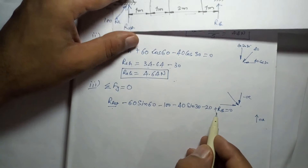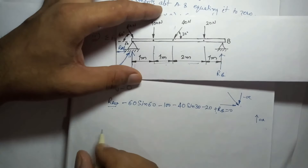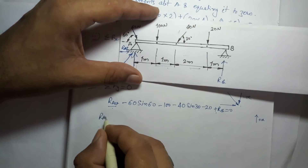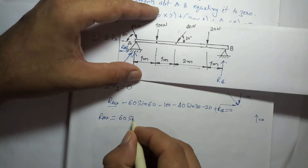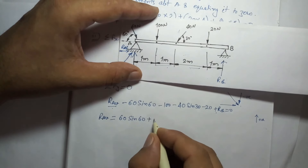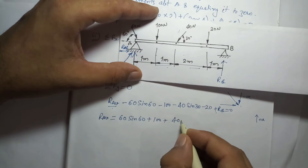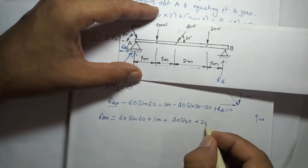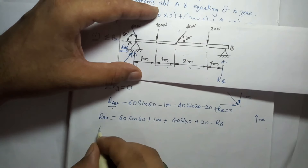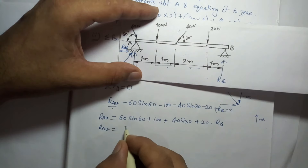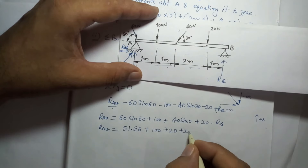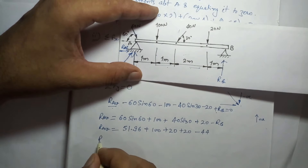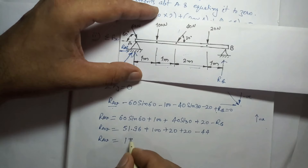We can find RAV since we know Rb equals 44 newtons. Substituting all values: RAV equals 60 sin 60 plus 100 plus 40 sin 30 plus 20 minus Rb. This gives 51.96 plus 100 plus 20 plus 20 minus 44, so RAV equals 147.96 newtons.